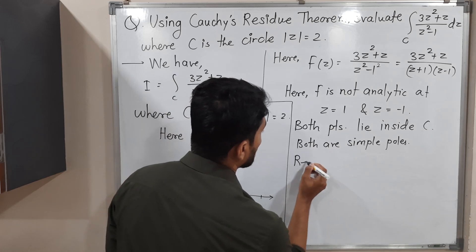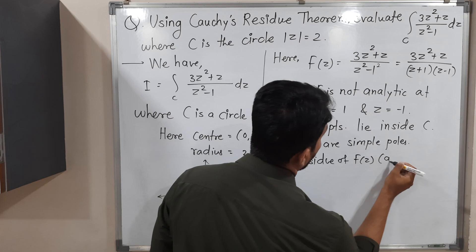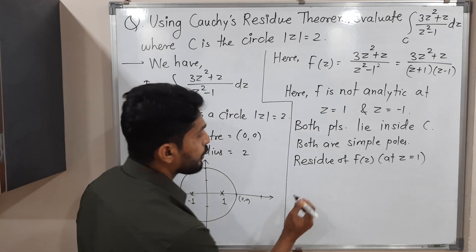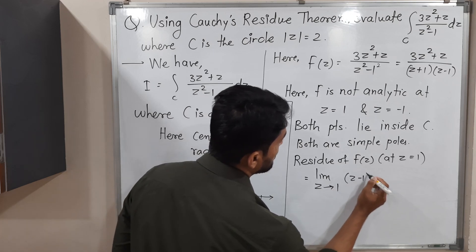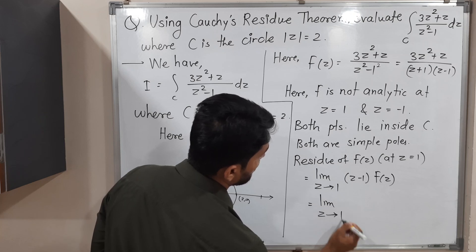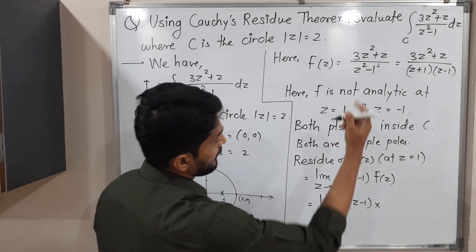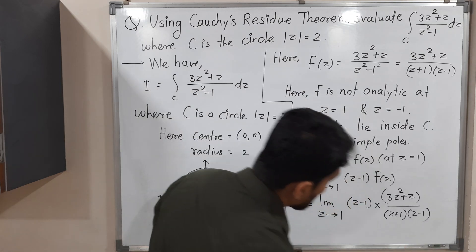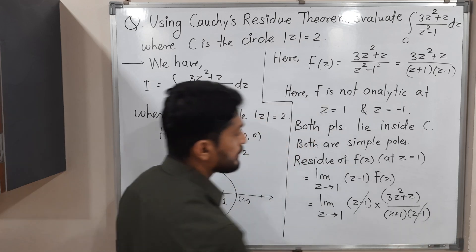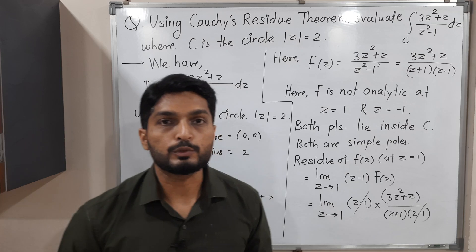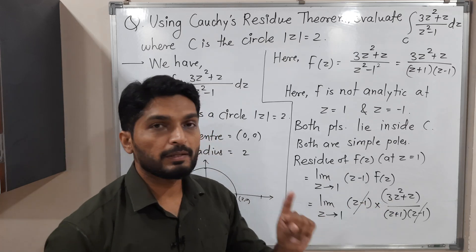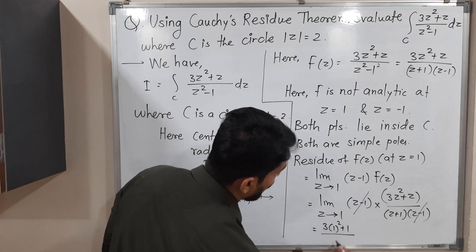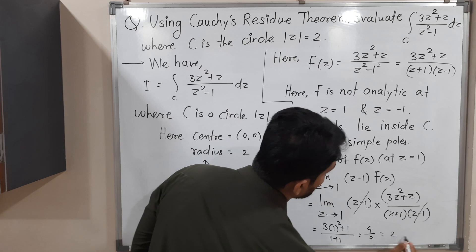So let us find the residue of f(z) at z = 1 one by one. It is a simple pole, so we use the formula: limit as z→1 of (z-1)·f(z). Substituting f(z): limit z→1 of (z-1)·(3z² + z) / [(z+1)(z-1)]. The (z-1) cancels, leaving (3z² + z)/(z+1). Putting z = 1: (3·1 + 1)/(1+1) = 4/2 = 2. So the residue at z = 1 is 2.